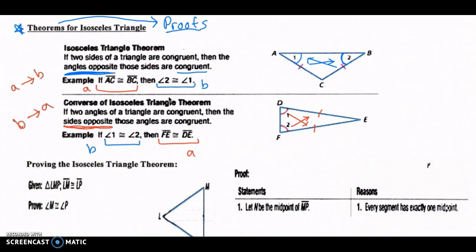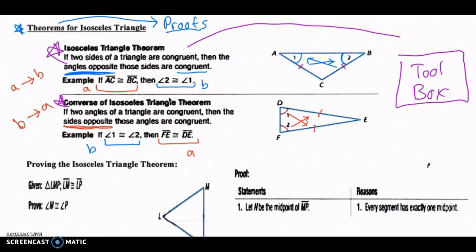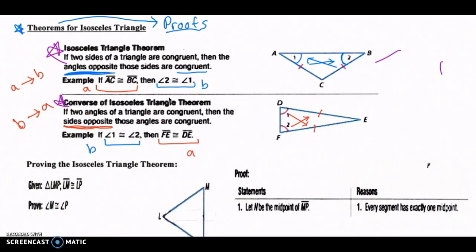We're adding these two theorems into our toolbox — remember that analogy. Now we're going to apply these theorems in our proofs, but first let's actually prove one of them: the isosceles triangle theorem. Remember, when proving a theorem we can't use that theorem in the proof itself, since we're trying to prove it.